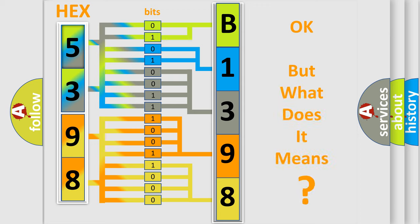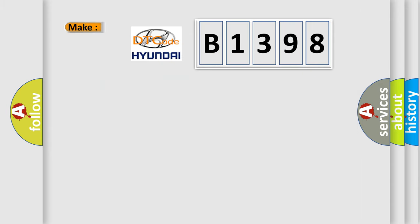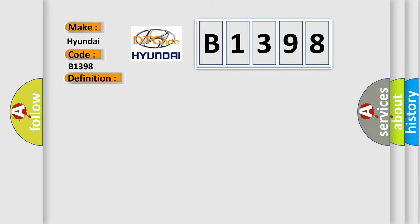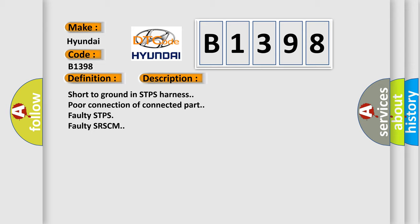The number itself does not make sense to us if we cannot assign information about what it actually expresses. So, what does the diagnostic trouble code B1398 interpret specifically for Hyundai car manufacturers? The basic definition is: STPS — Seat Track Position Sensor Passenger, open or short to ground. A short description of this DTC code: short to ground, STPS harness or port connection of connected part faulty, STPS faulty, SR-SCM faulty.